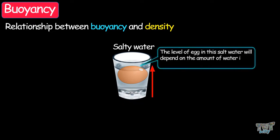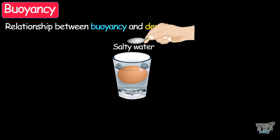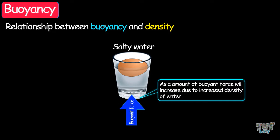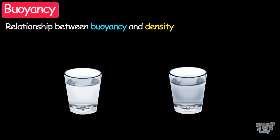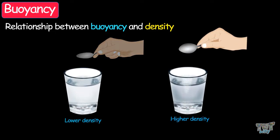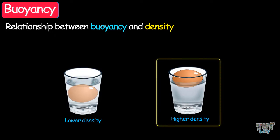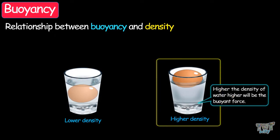The level of the egg in the water will depend on the amount of salt in the water, or the density of the water. If you add more salt, the egg will float up higher, as the buoyant force will increase due to the increased density of water. You can experiment with this by taking two glasses of water with different amounts of dissolved salt — the egg will be higher in the water with more salt, due to the higher density.